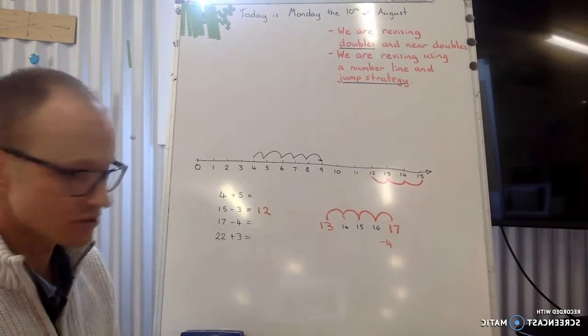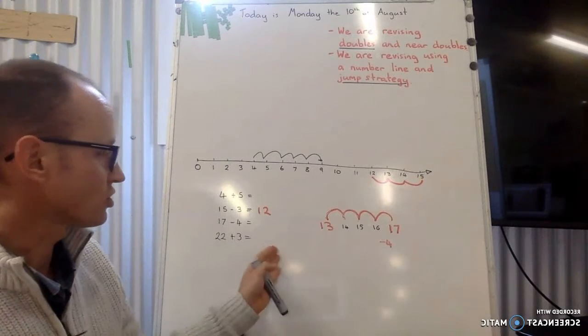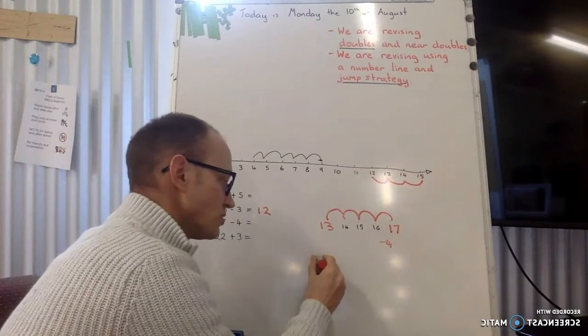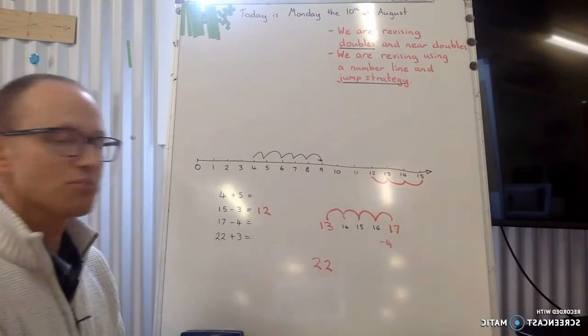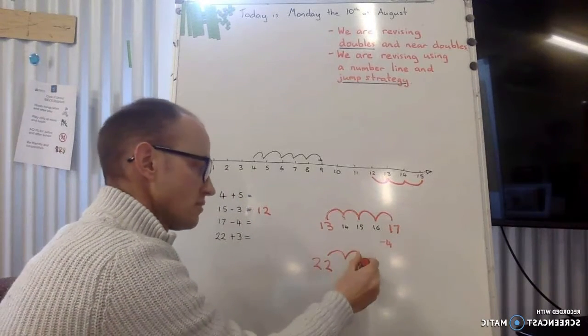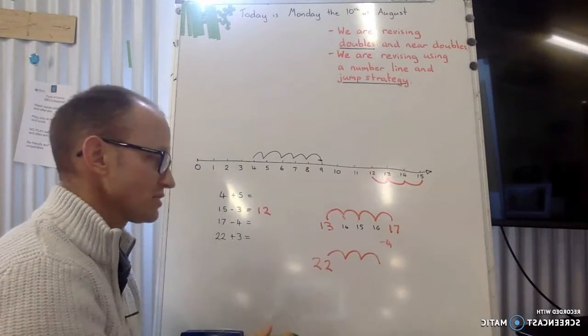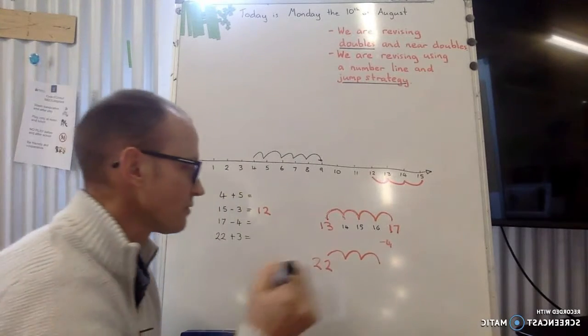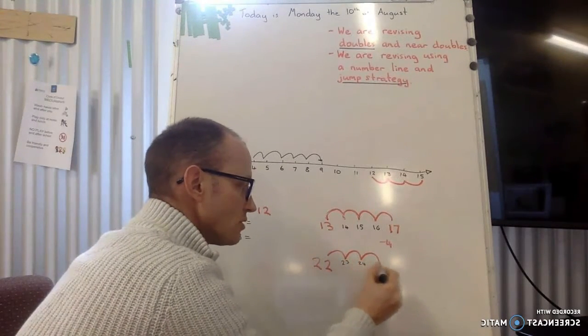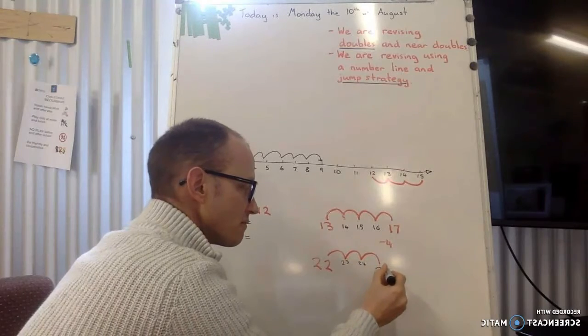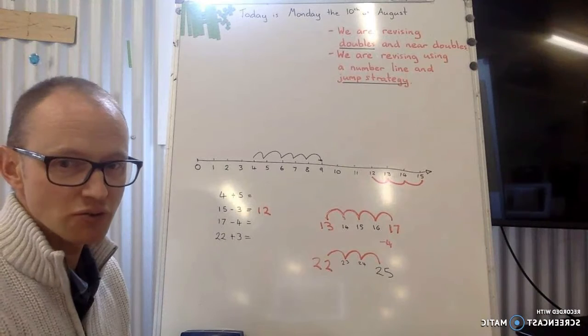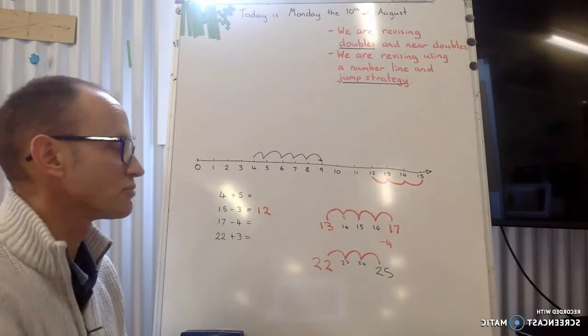22 plus 3. So again, our number line doesn't go that high. So to show you how to do it just in our books, 22 plus, we're going to put 22 here and it's plus 3. So it's jumping to the right. So 22, 3 jumps. And that gives us, and I'm going to write it in, so we've got the 23, 24. 24, that's it. 22 plus 3 equals 25. So we did the 3 jumps to the right.